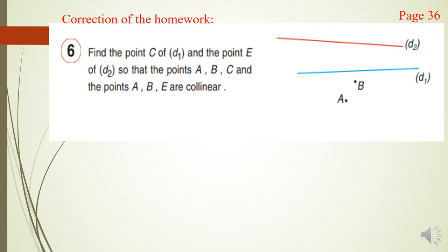Then, to find the points C and E, we have to join the two points A and B because ABC are collinear and ABE are collinear also. We have to make a line, the line AB, like this.